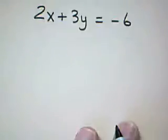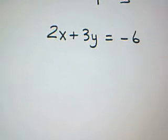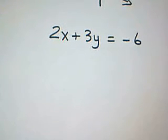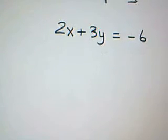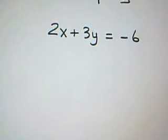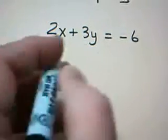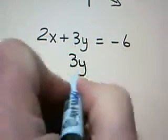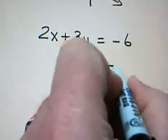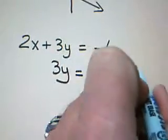If I have this equation, this equation is currently in what's called standard form. I like to have the equation in slope intercept form, which means we need to solve it for y. So my first step would be to subtract 2x. 3y is equal to the opposite of 2x minus 6.